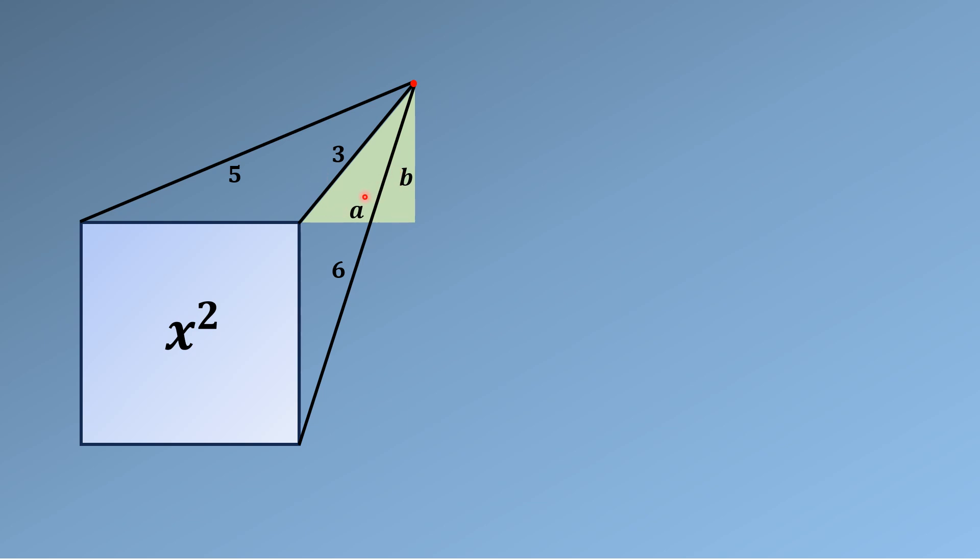Then by the famous Pythagorean theorem, a² + b² = 3². Let's call this equation number one.